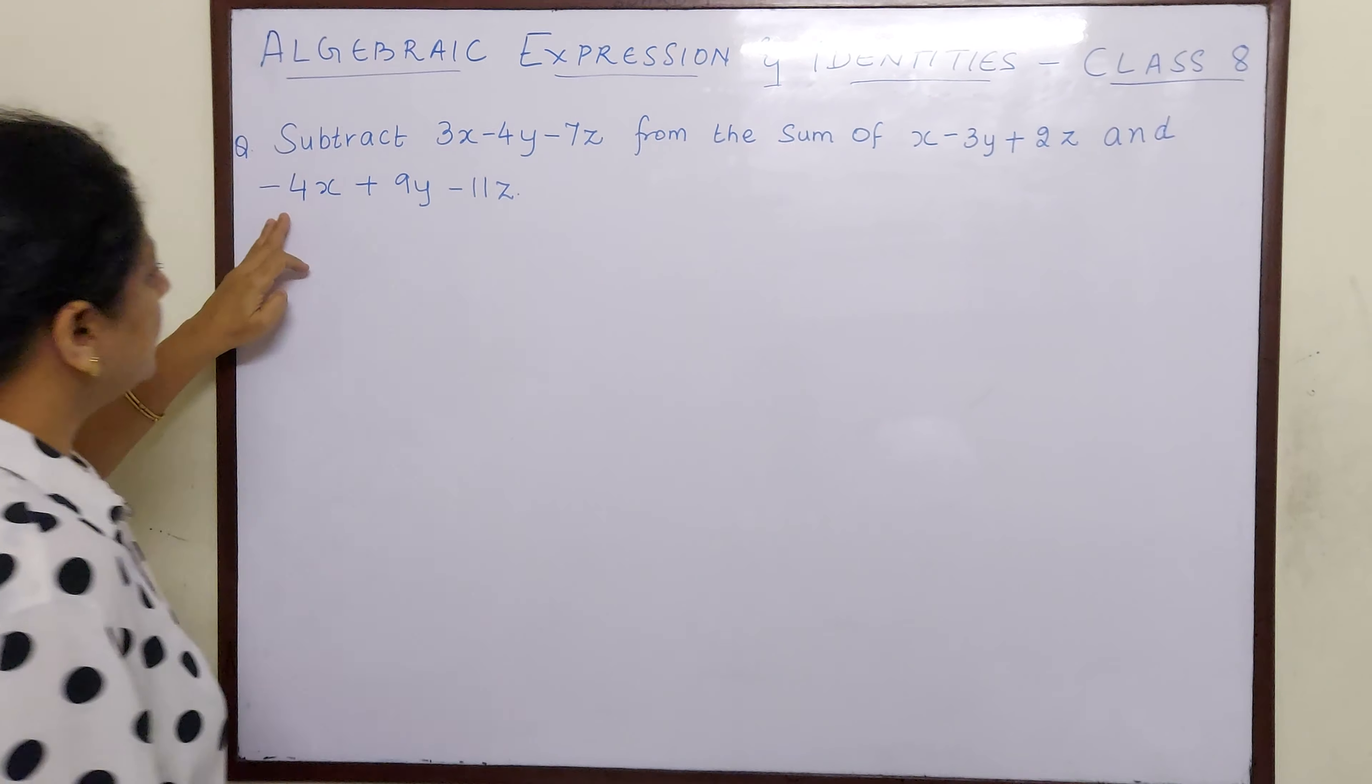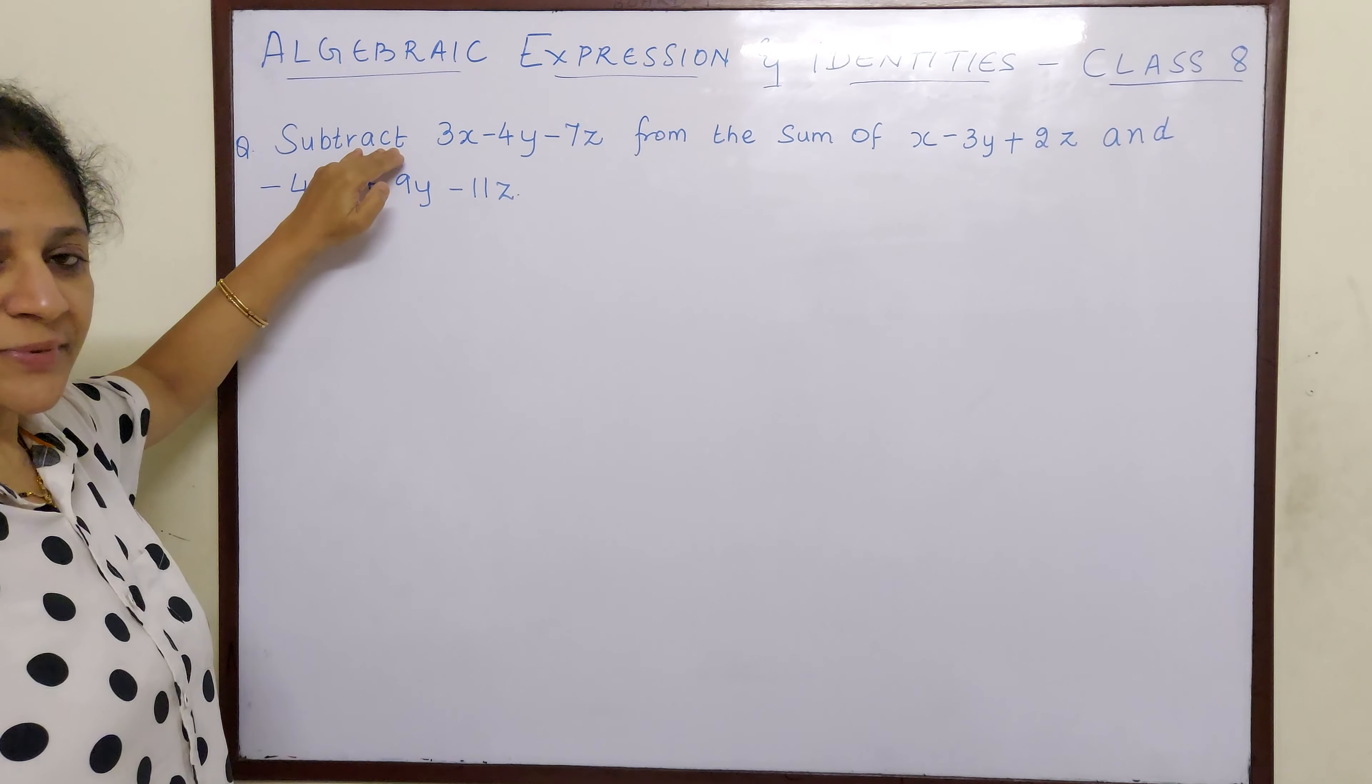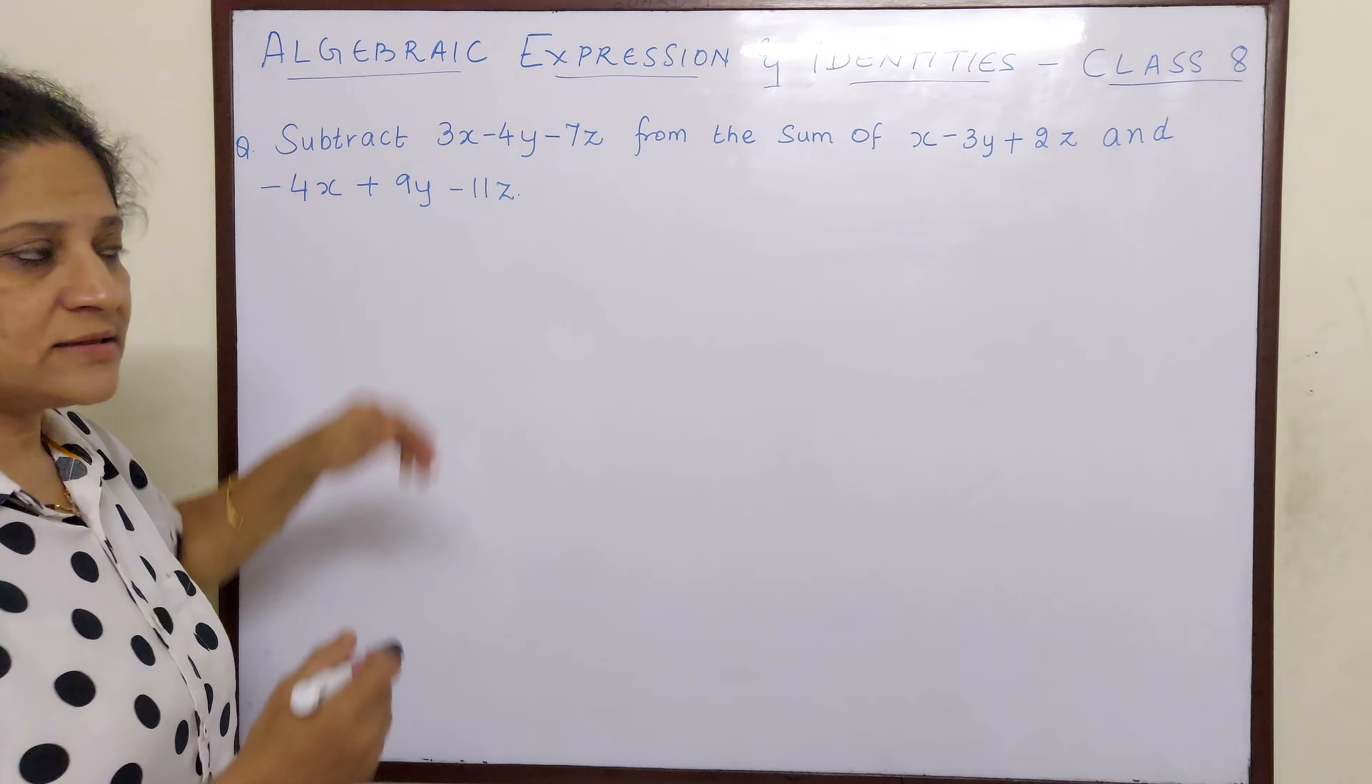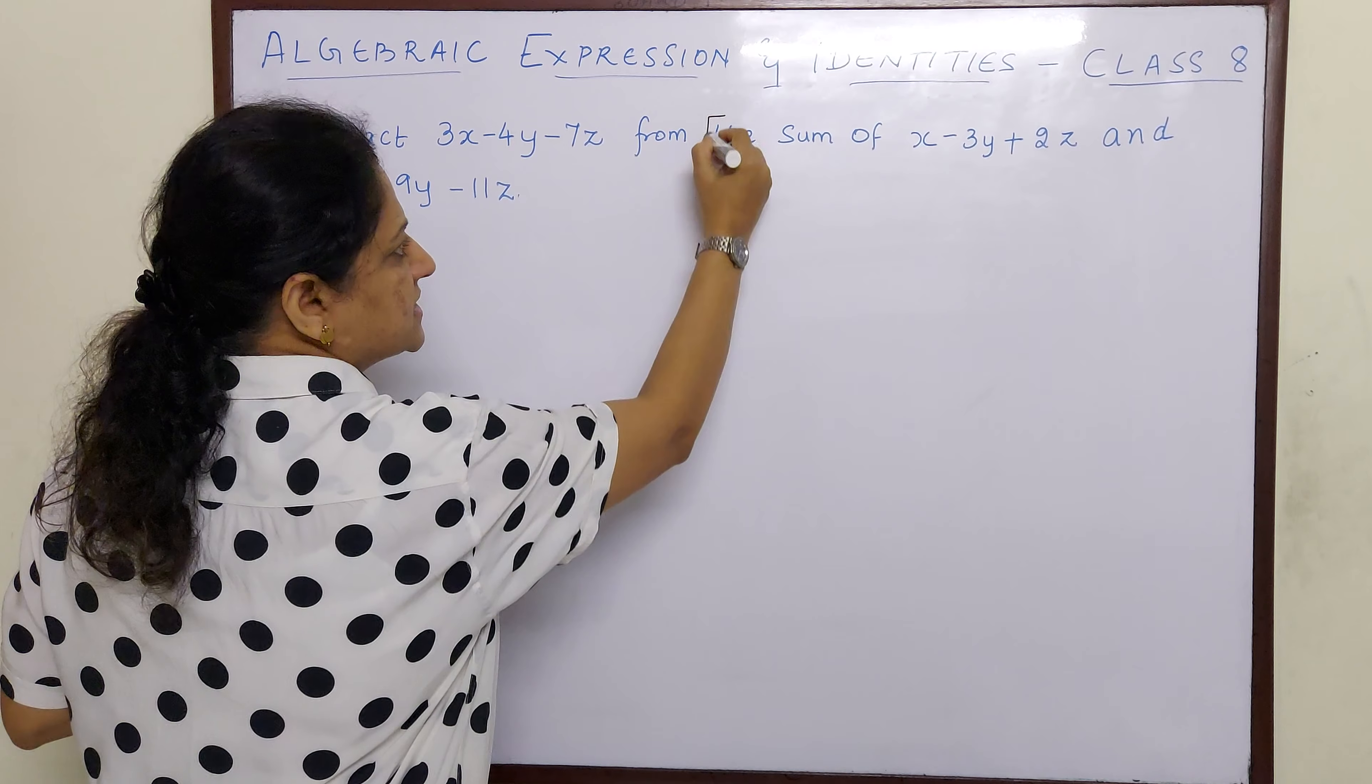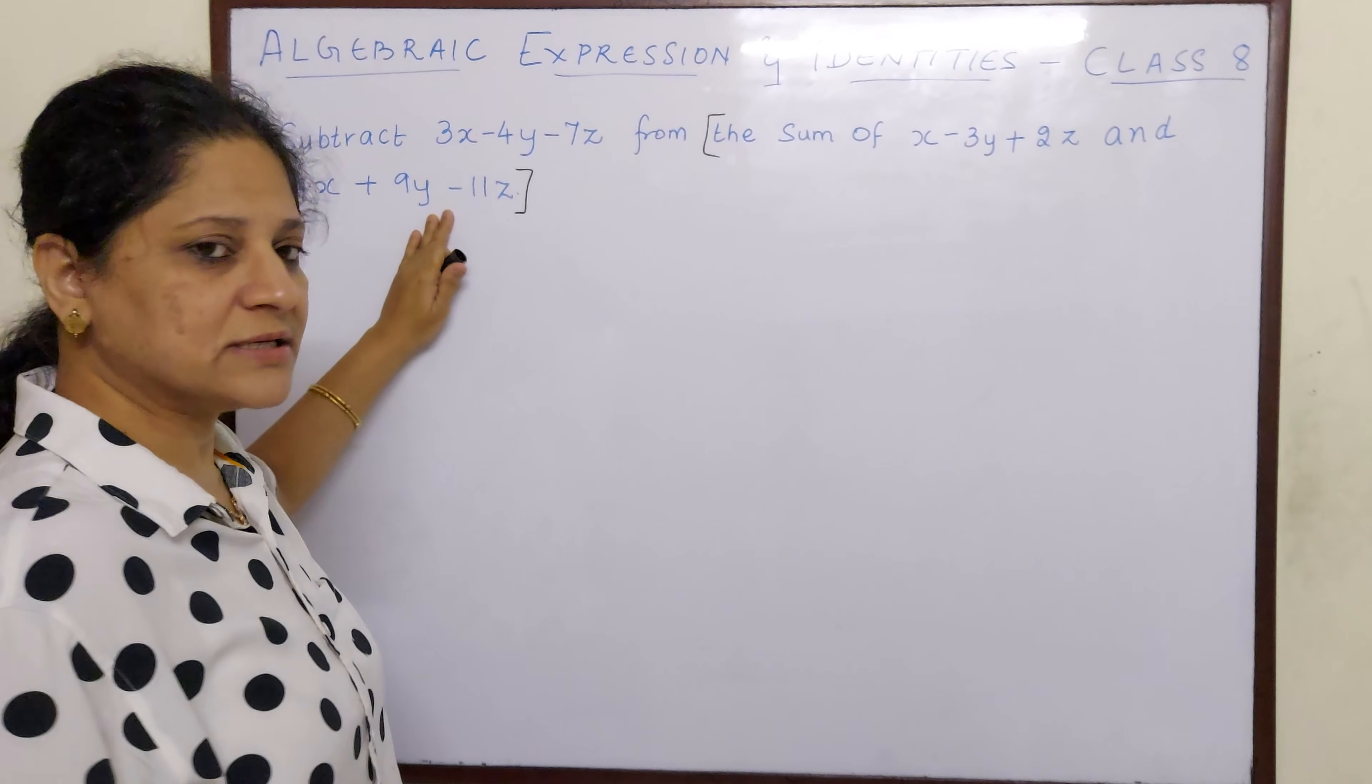So here this sum involves both subtraction and addition. Before subtracting, we have to subtract from what? From the sum of this and this. That means our first step is to add this algebraic expression with this.